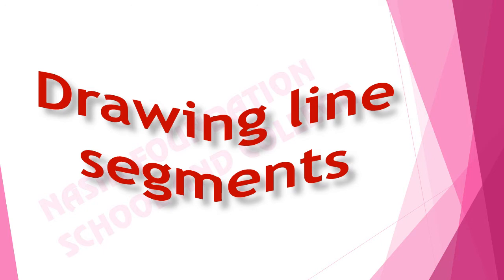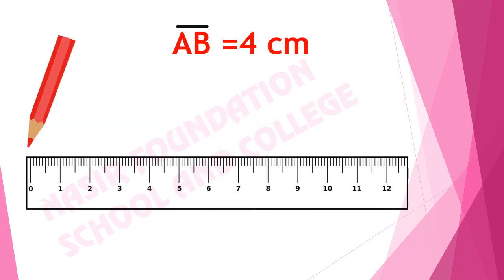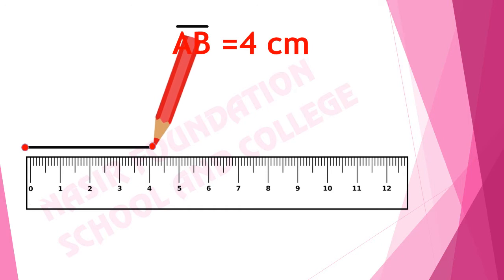In this video we will learn how to draw line segments of different lengths. Let's start. To draw a line segment, we place the scale and mark a starting point at zero centimeter. As we have to draw line segment AB of four centimeter, we will mark another point at four centimeter, and then we will draw the line. This is the line segment of four centimeter.